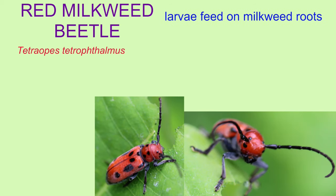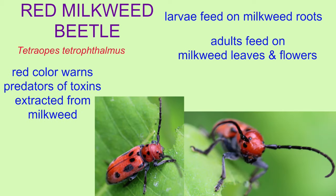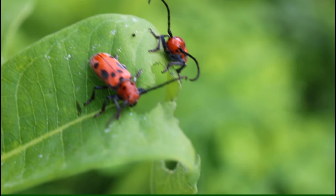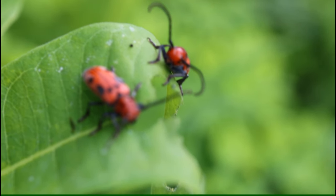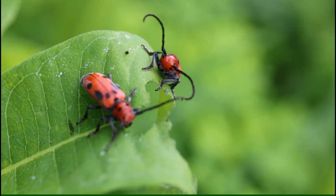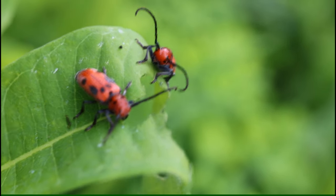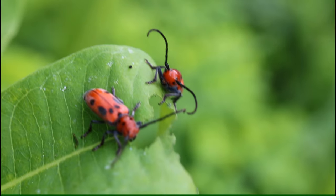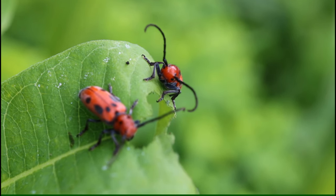The red milkweed beetle larvae feed on the roots of milkweed plants within the soil. The adults feed on the leaves and flowers of milkweed plants. And because of the toxins from the milkweed plants, which the insects incorporate into their own bodies, their red color warns predators to avoid preying on them.